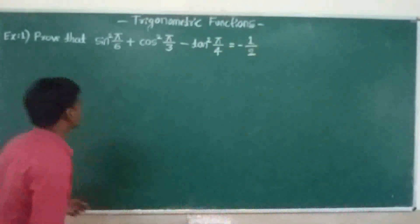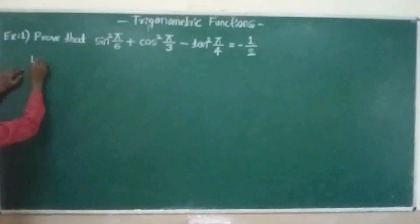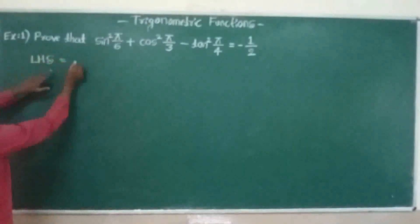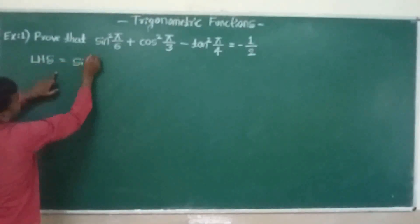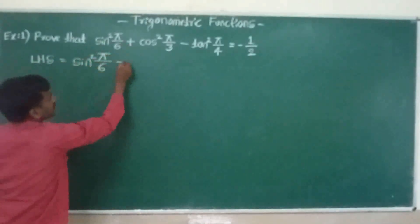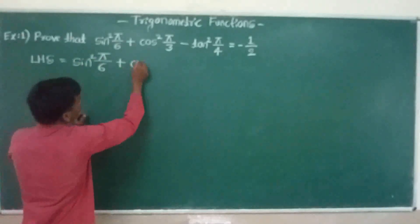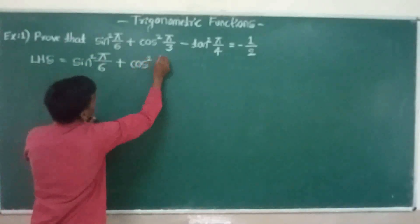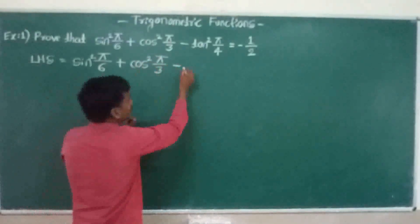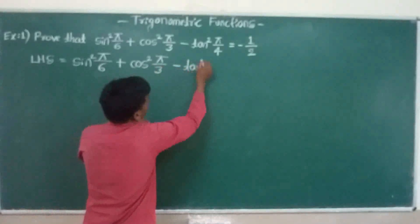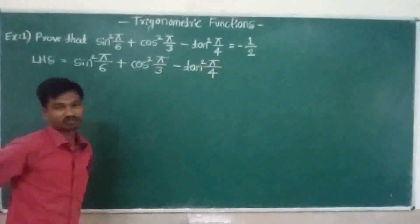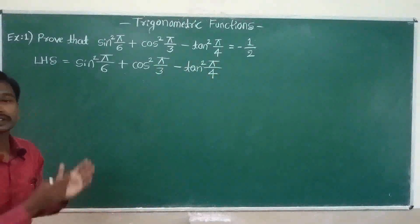Here we take the LHS. LHS is equal to sin squared pi divided by 6, plus cos squared pi divided by 3, minus tan squared pi divided by 4. This is the LHS.